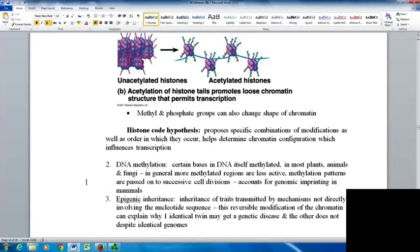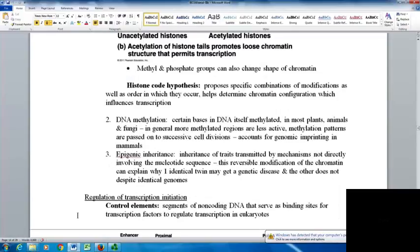Another way of modifying chromatin is DNA methylation—certain bases in the DNA itself become methylated. This happens in most plants, animals, and fungi. In general, the more methylated the regions are, the less active. Methylation patterns can be passed on through cell divisions, accounting for genomic imprinting in mammals.